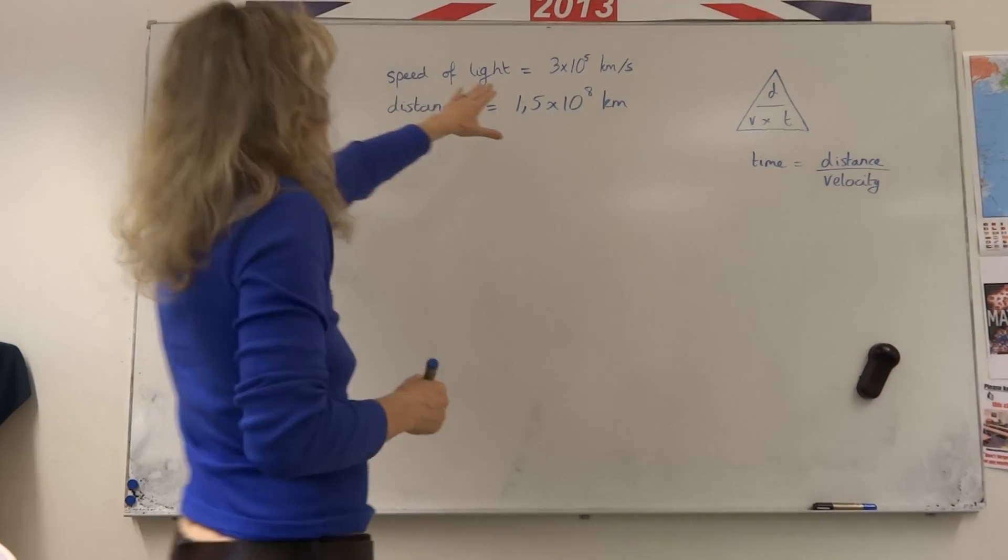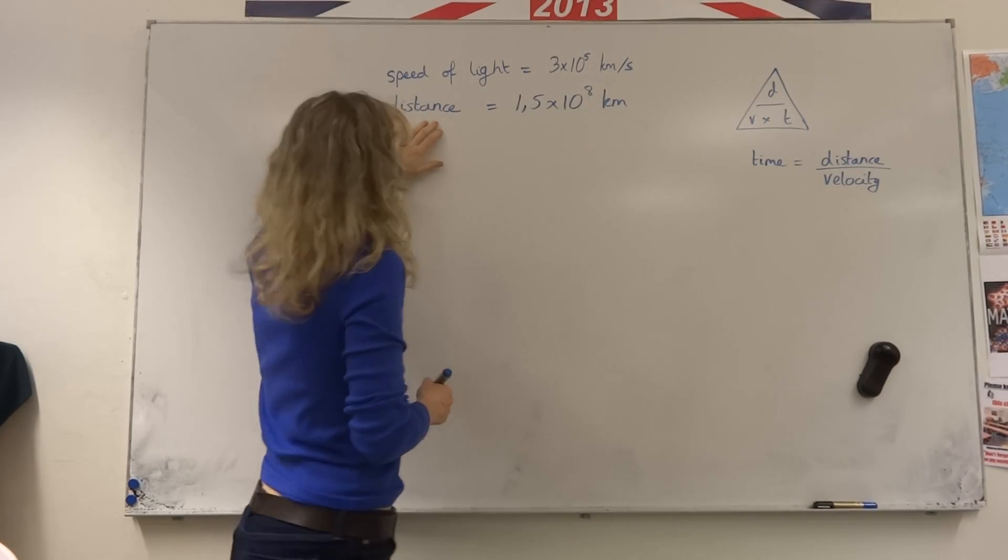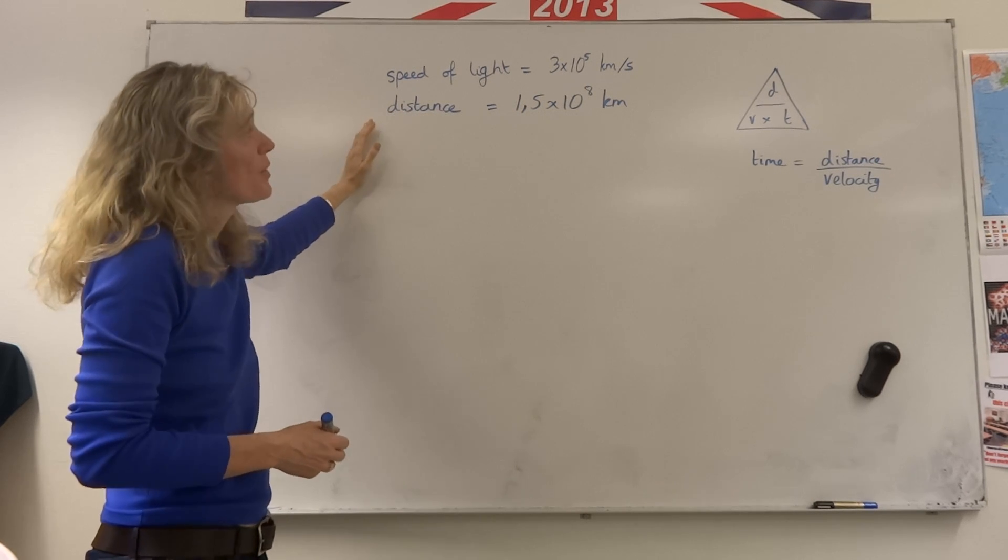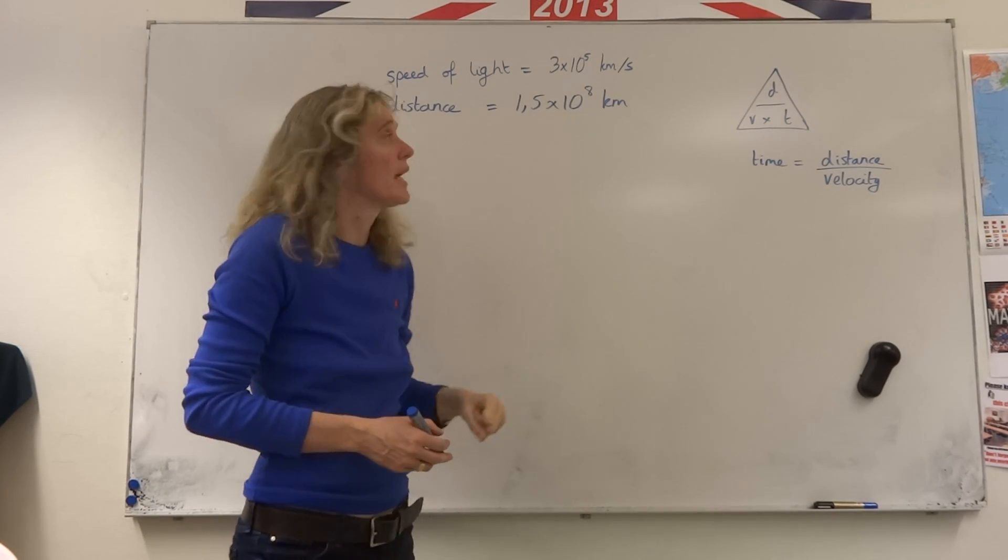The speed of light, 3 times 10 to the 5 kilometers per second. The distance from the sun to the earth, 1.5 times 10 to the 8 kilometers.